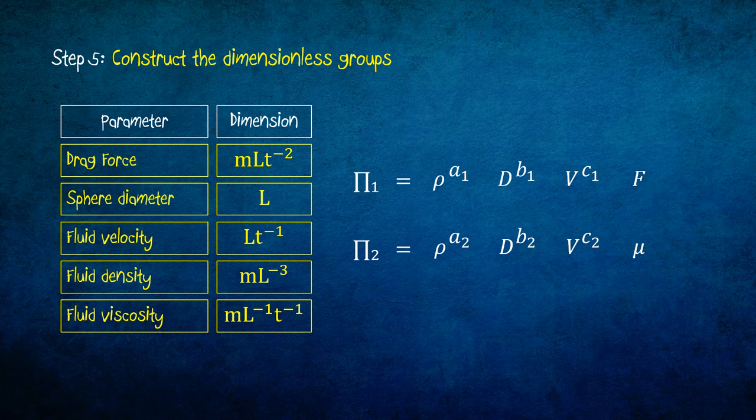So, our pi's are: pi 1 equals rho power a1, times d power b1, times v power c1, times f. Pi 2 equals rho power a2, times d power b2, times v power c2, times mu.